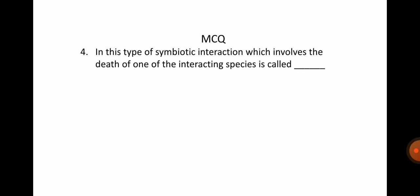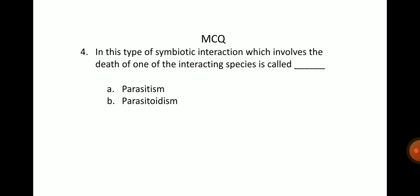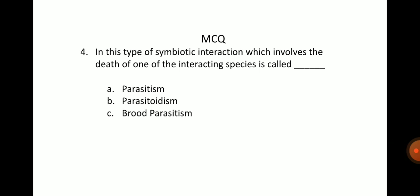Next question: in this type of symbiotic interaction which involves the death of one of the interacting species is called? Options: A. Parasitism, B. Parasitoidism, C. Brood parasitism, D. Symbiosis. The answer is option B, it is called parasitoidism.